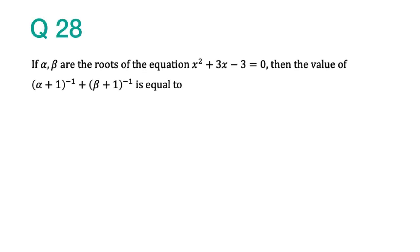Take a moment to read the question. Alpha and beta are the roots of the quadratic equation x squared plus 3x minus 3 equals 0, and we have to find out the value of the given expression. The options are shown over here. How do we do this question?